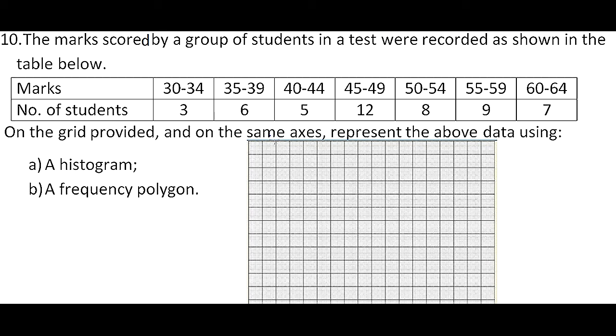Part B, a frequency polygon. So we are going to label our graph, our axis, so that we are able to represent the information. And we do that by the horizontal scale. Here we use the class limit. For example, the first group we have 30 to 34.